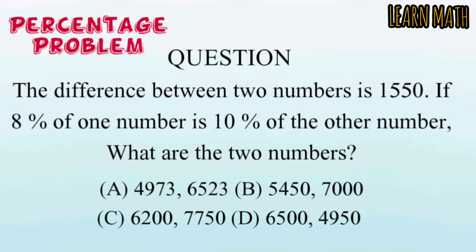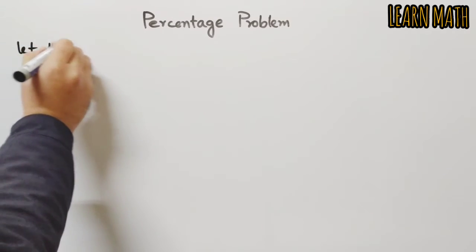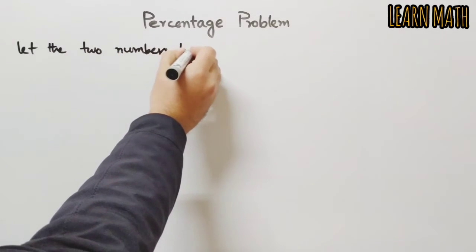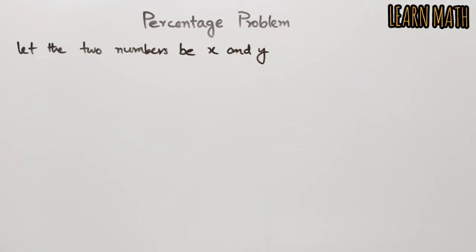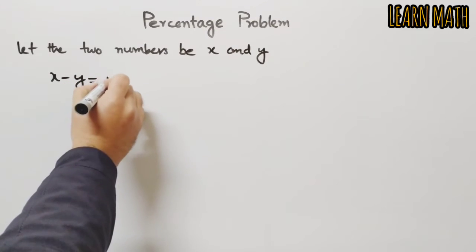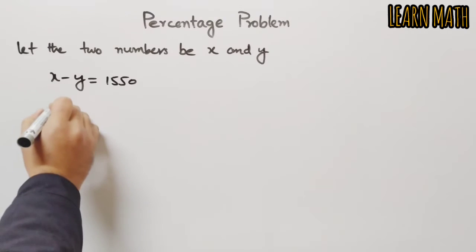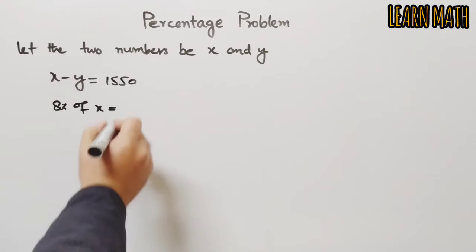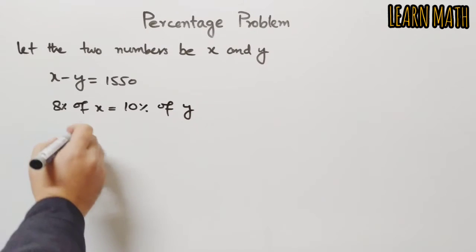A, B, C, D are four given options. Let's begin to solve the question. Let the two numbers be x and y. According to the question, the difference between the two numbers is 1550, and 8% of one number is equal to 10% of the other number. So we can write like this: